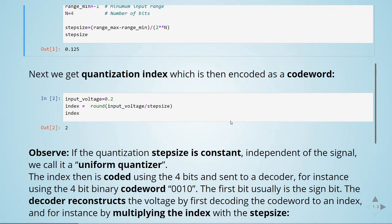When we have a constant step size, we call that our quantizer is uniform. This index is later on coded using the 4 bits and sent to a decoder.